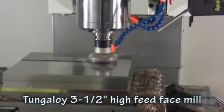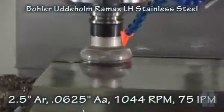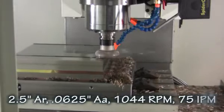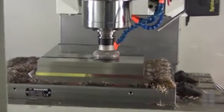Roughing begins with a 3 1⁄2 inch high-feed facing mill from Tungaloy. This hefty cut removes over 15 cubic inches of steel per minute, yet pulls only about 60% of the machine's continuous power limit.